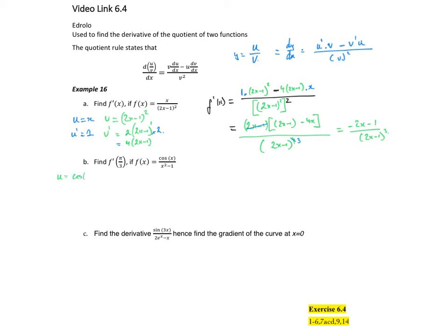So don't forget that these rules are given on our formula sheet. So you've just got to remember how to apply them. Derivative of cos is minus sin. And if v is equal to x² - 1, v' is equal to 2x.